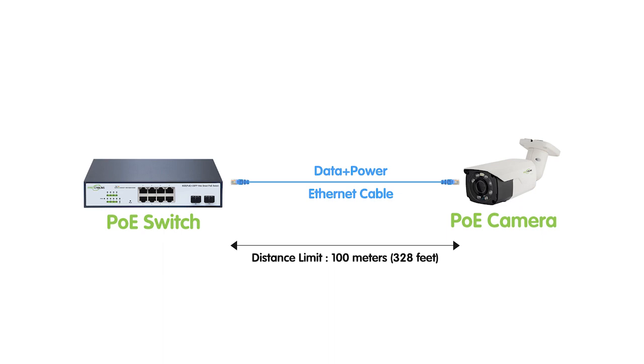The maximum distance is about 100 meters, or 328 feet. As the cable length increases, the electrical resistance of the cable causes a drop in voltage, leading to potential power delivery issues. Data signals can degrade and result in reduced network performance.